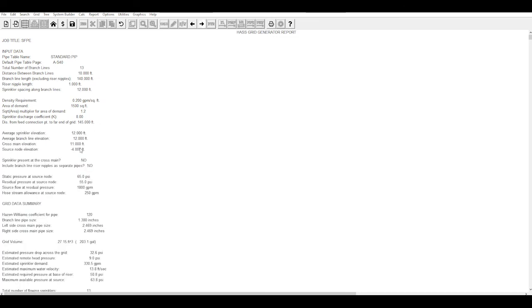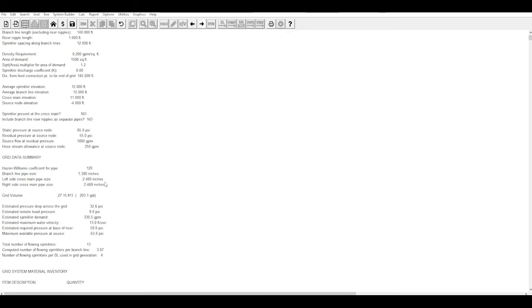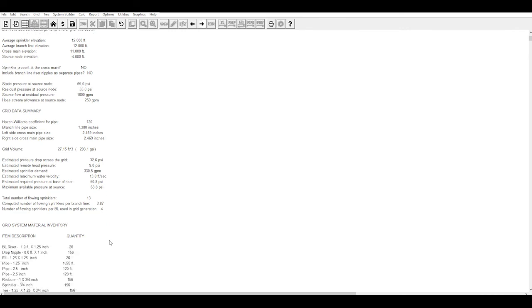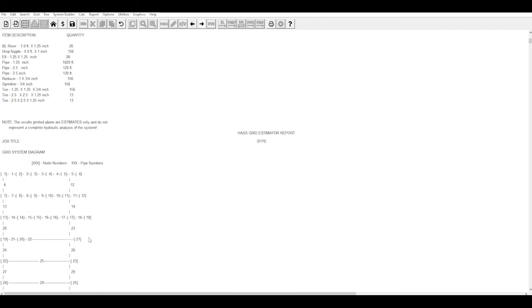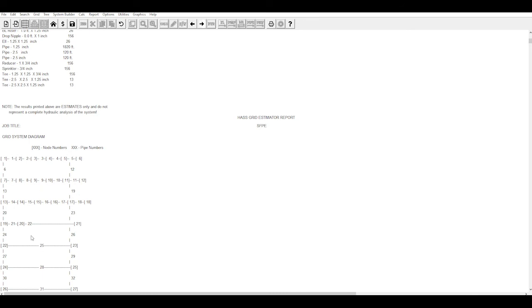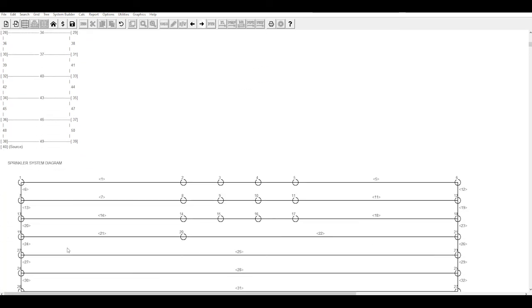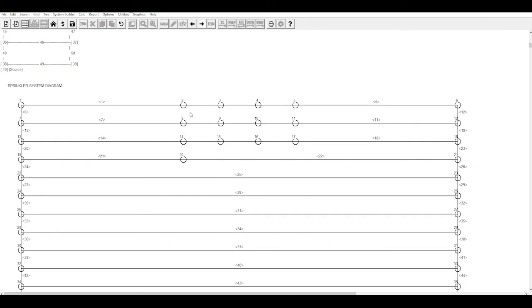So here's all that data that we entered. You can verify here again. The data that it's using to calculate. See here it also calculated out 13 sprinklers. 3.87 per branch line. So four per branch line. Then it gives you an item breakdown. And then we supply this little graph here. So you can verify that everything looks good. There's our sprinklers right there. Connecting to our cross mains. There's an actual graphical layout. So you can see here all 13 sprinklers, where they are on the branch lines.